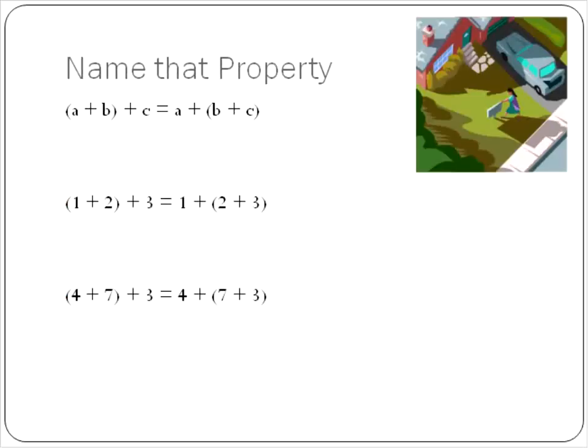All right. Let's do some practice work. See if you remember what we've talked about. The property that says A plus B plus C is equal to A plus B plus C. We just decide to put parentheses around different numbers.